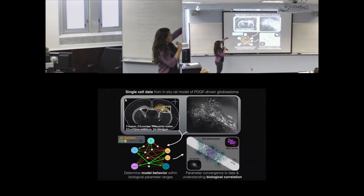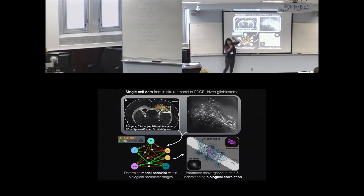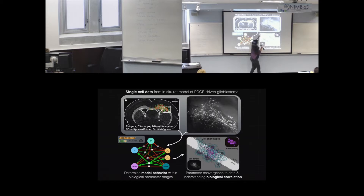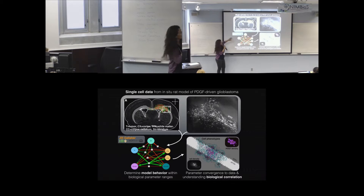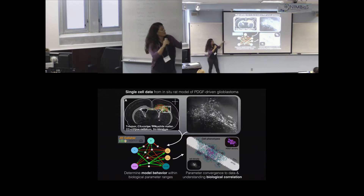A retrovirus is infected into the white matter, producing PDGF, which recruits progenitor cells and forms a large mass. We're analyzing single-cell tracking data — divisions and events over time — and trying to match an agent-based model to that data by running many simulations with different parameter sets to establish how input parameters affect output parameters.